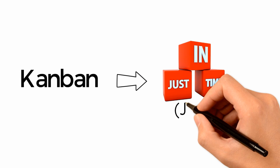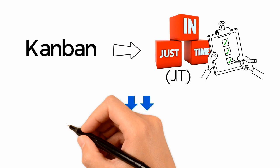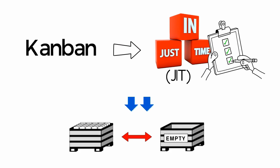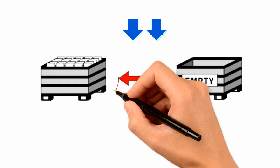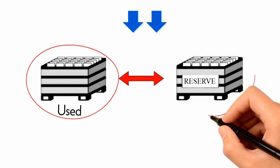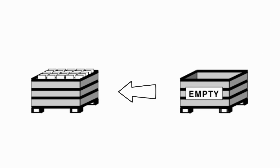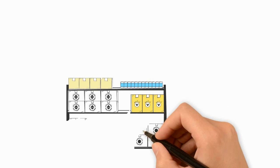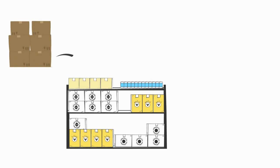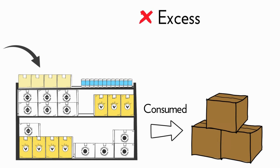Kanban is a just-in-time (JIT) inventory management system using a two-bin approach. While one bin is being used, one bin will be kept as reserve. As soon as the bin becomes empty, the supplier will be informed to refill the empty bin. As inventory is added only when consumed, there is no excess or shortage.